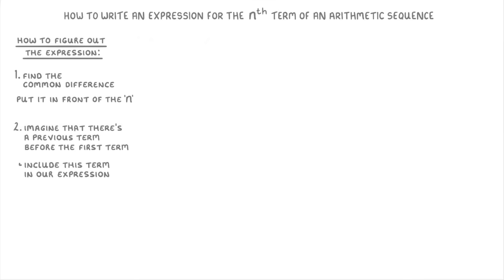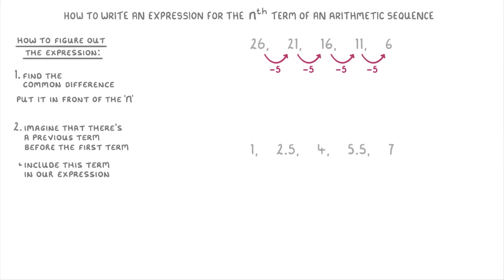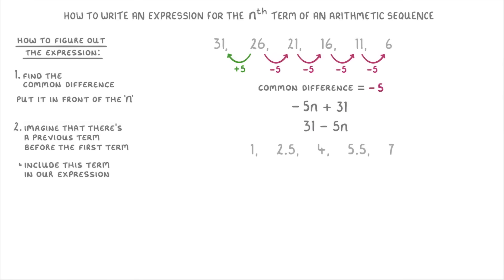Let's use this same technique to find the expressions for two more sequences. In our first sequence, the terms are decreasing by 5 each time, so the common difference is negative 5, and this means that our expression will start with minus 5n. Then to find the imaginary first term, we need to add 5 to the 26, which gives us 31. So we add 31 to our expression to get minus 5n plus 31, or if you prefer, 31 minus 5n. It's completely up to you which way around you write it, but we do normally put the n term first.